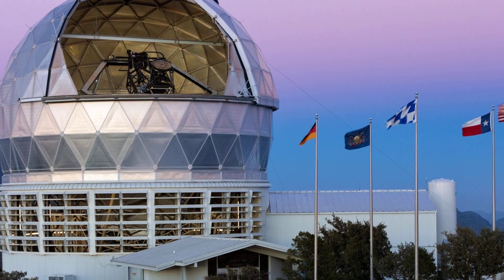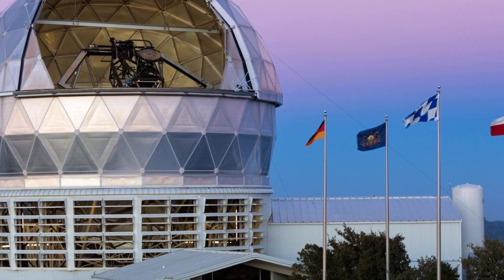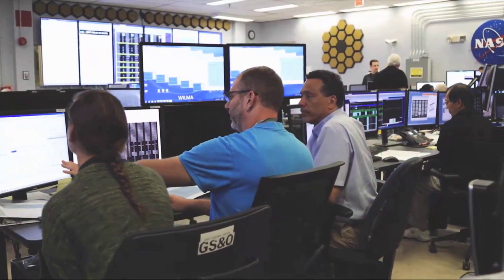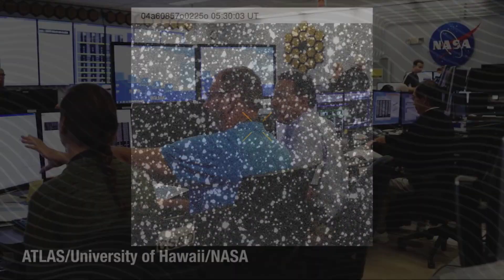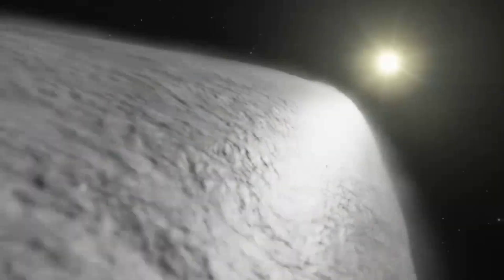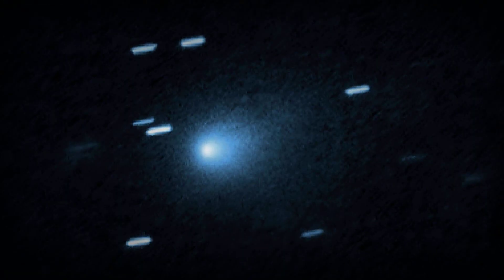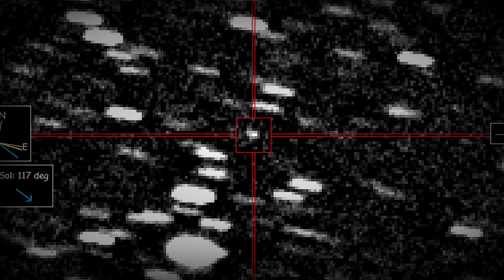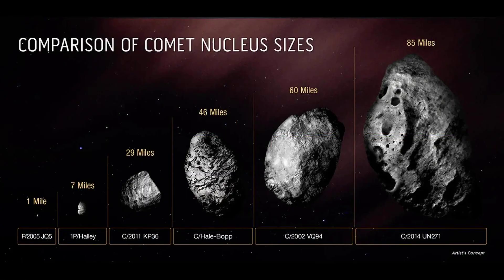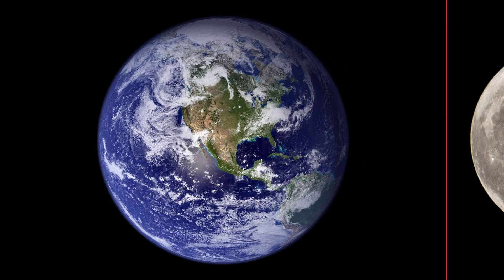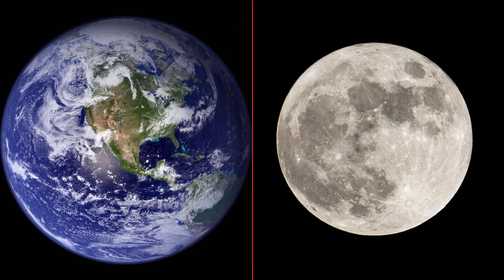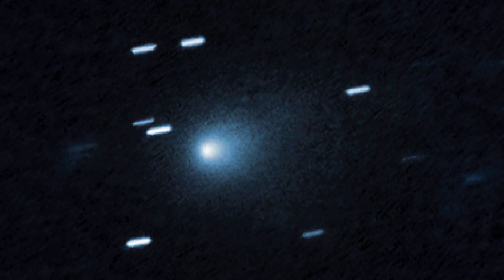In research labs from Pasadena to Munich, astronomers dropped routine work and began dissecting every pixel. Social feeds and private forums filled with raw frames, overexposed cutouts, and animated GIFs stacking the comet's motion frame by frame. The comet's nucleus, hidden deep within the haze, was too small and distant for any hope of resolution, comparable to spotting a cell phone on the moon from Earth. But the coma, thousands of kilometers wide, was visible.